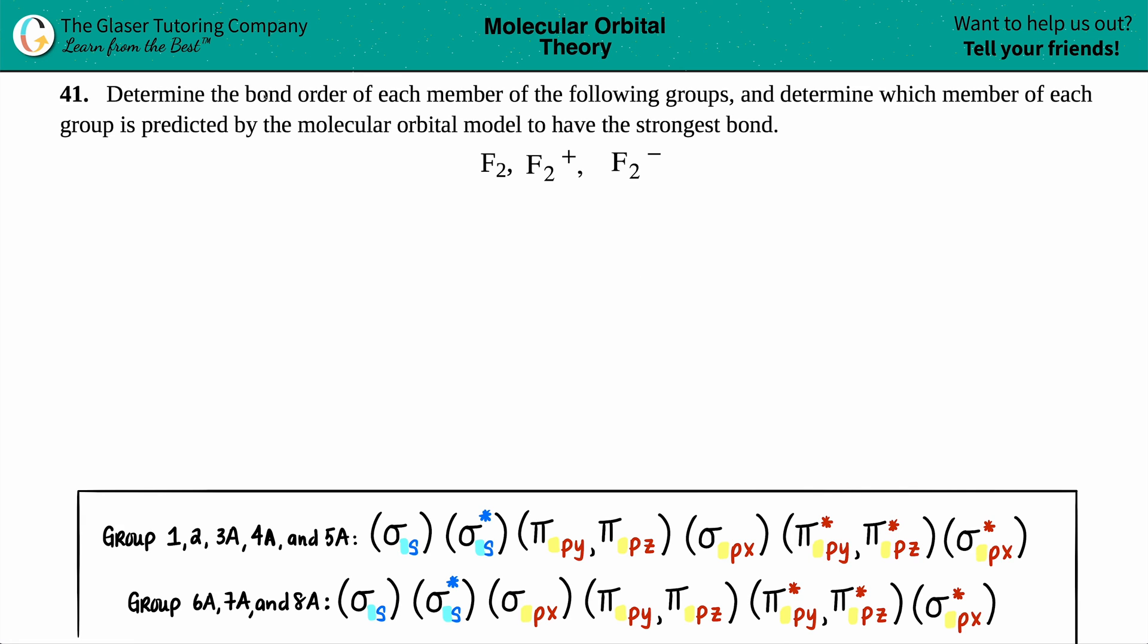Number 41. Determine the bond order of each member of the following groups and determine which member of each group is predicted by the molecular orbital model to have the strongest bond. And then we have our three molecules here: F2, F2 plus, and F2 minus.